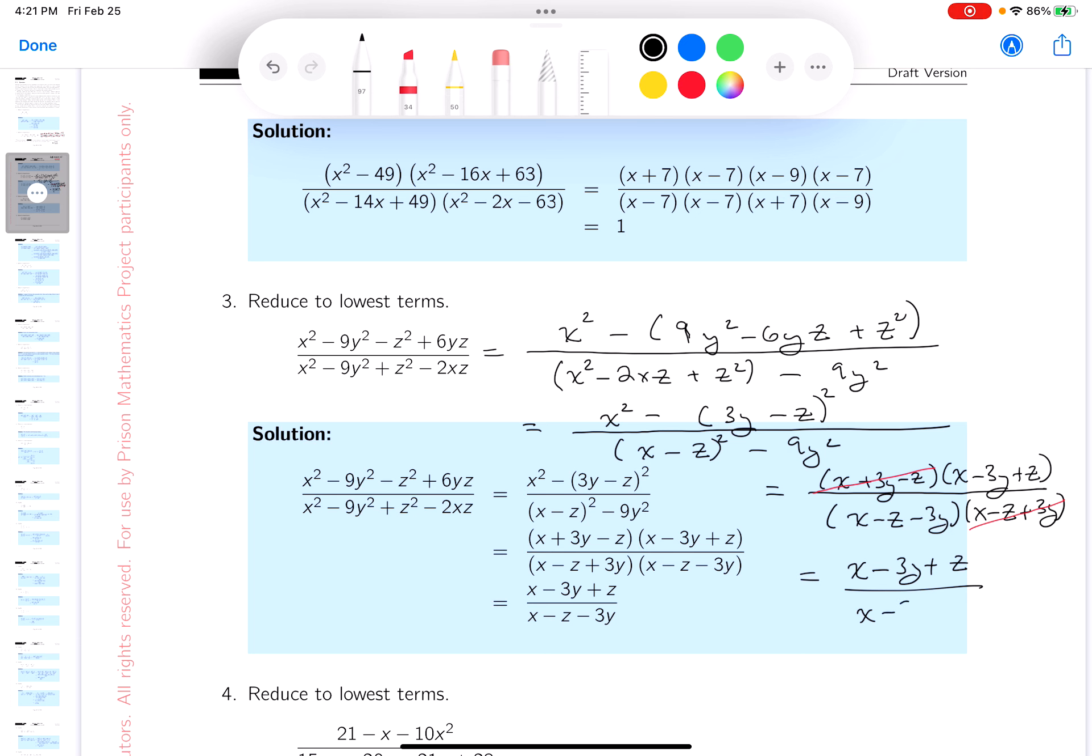Let's put it in order, alphabetical order. x minus 3y plus z. Order really doesn't much matter. I like alphabetical order, but it's perfect. We got the same answer, and that's good news.